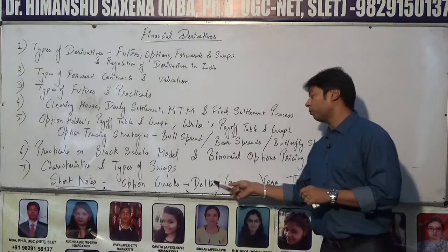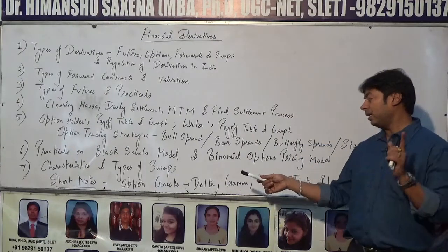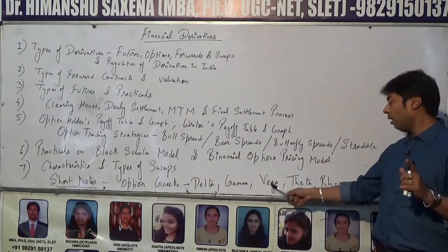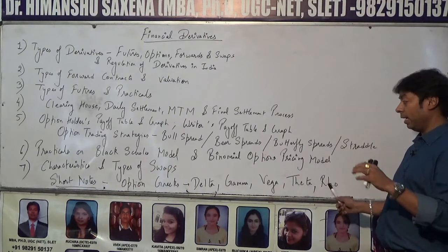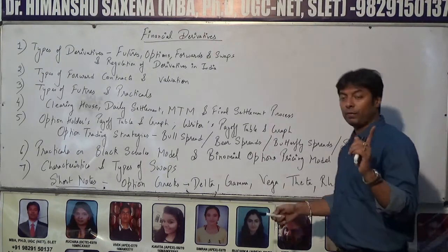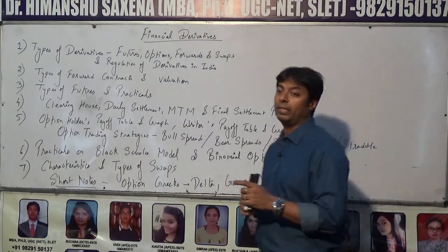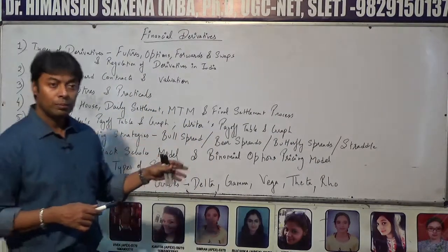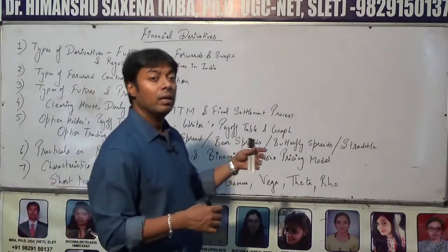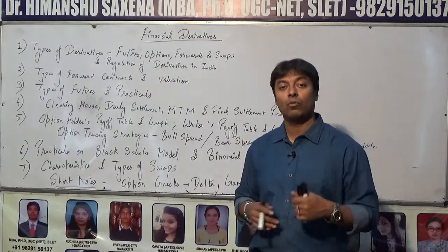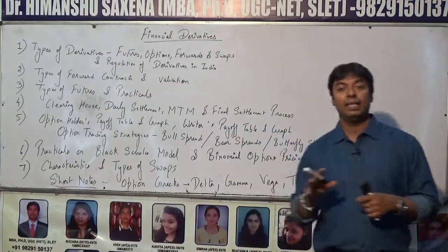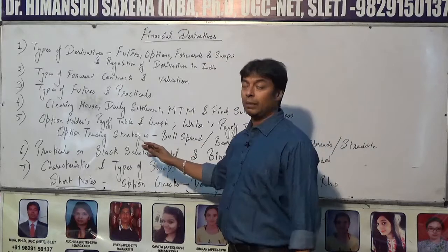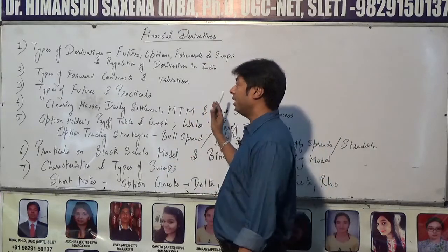So the major option Greeks are delta, gamma, vega, theta, and rho. You can learn these shortcuts: V for vega and V for volatility; T for theta and T for time; R for rho and R for rates — specifically interest rates. These are the crux of this subject, financial derivatives.